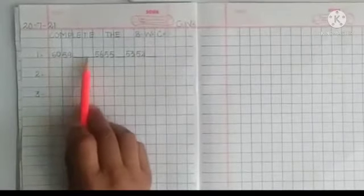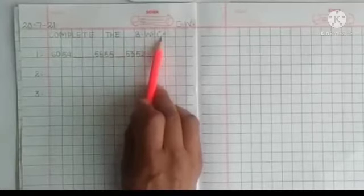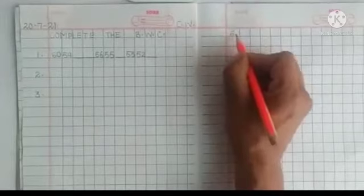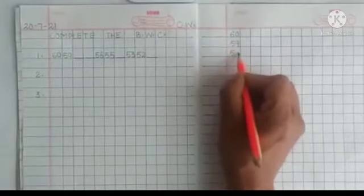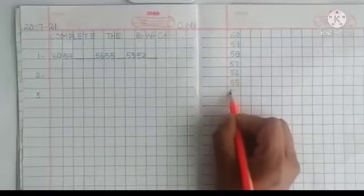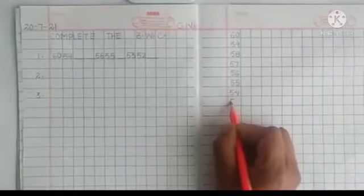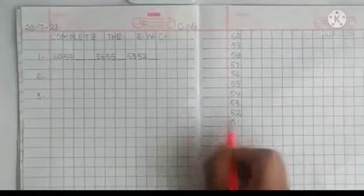In these blanks you have to write the correct backward counting. First we have to write backward counting from 60 to 51: 60, 59, 58, 57, 56, 55, 54, 53, 52, and 51.